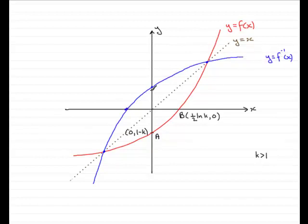So what are these points here? We've got to mark these points in. Well, we know that B mirrors over to here. Now if it's a half natural log of k units out that way, it's going to be half natural log of k units upwards. So the coordinates are going to be zero and then a half natural log of k.